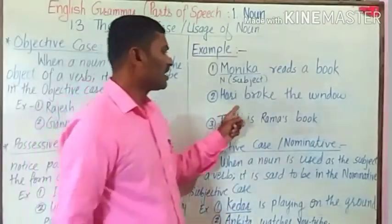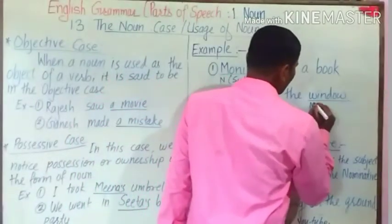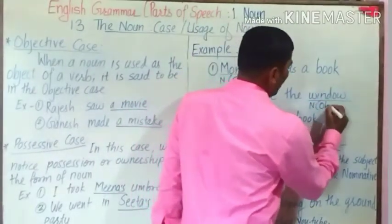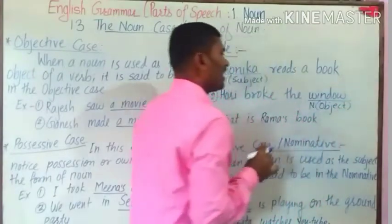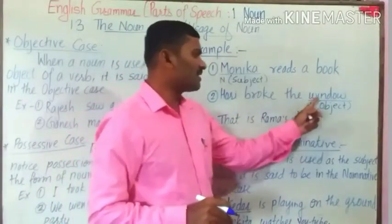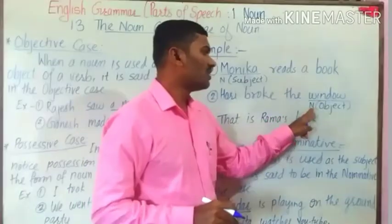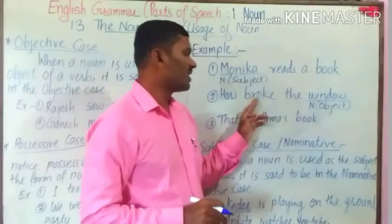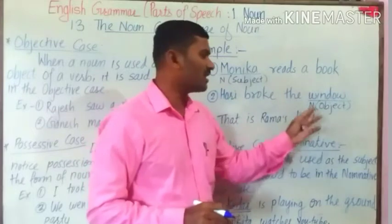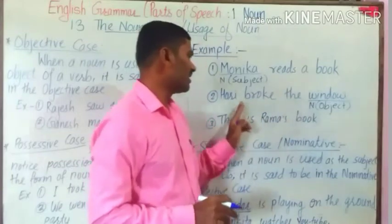Number two: Harry broke the window. In this sentence, window is a noun, and this word is functioning as an object. What was broken? The answer is: window was broken. So, window is functioning as an object of the verb. Therefore, it is in objective case — it is working here as an object. This noun is functioning as object in the sentence.